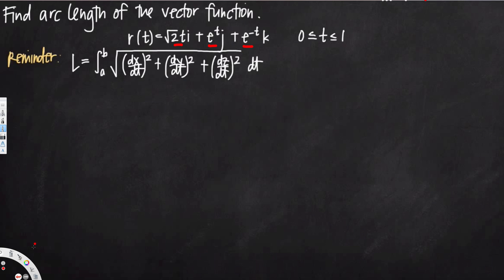Let's write them first. x is equal to square root of 2 times t, y is equal to e to the power t, and z is equal to e to the power negative t.